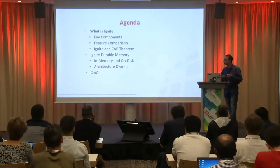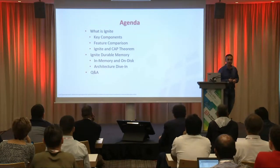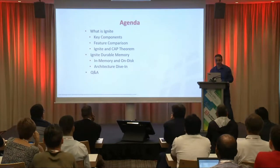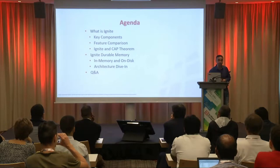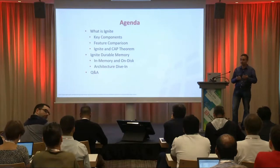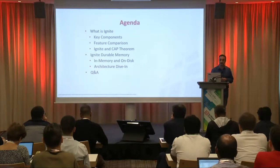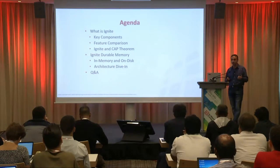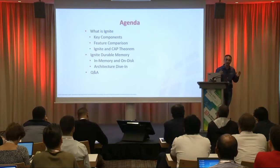We'll talk about what Ignite is and cover some key components. We'll do a feature comparison, and we will discuss the CAP theorem and where Ignite falls on it — I've been getting a lot of questions about that. Then we'll go into detail on how Ignite durable memory works: page memory allocation, memory regions, memory segments, pages, how pages are structured, how indexes are structured, and then we'll move to Q&A. There's a lot to cover, so I'll try to move fast. If I move too fast and you lose track, let me know and I'll slow down.